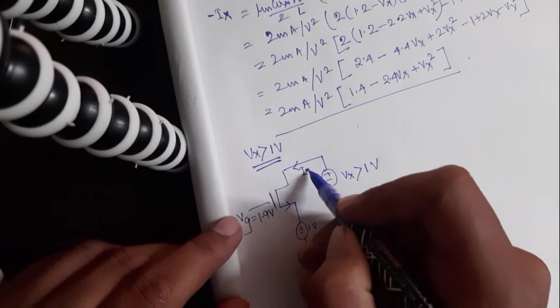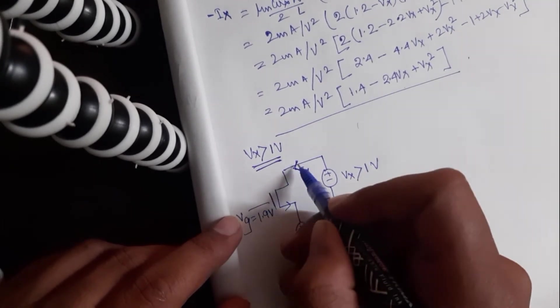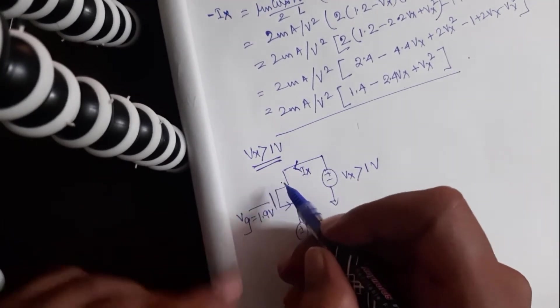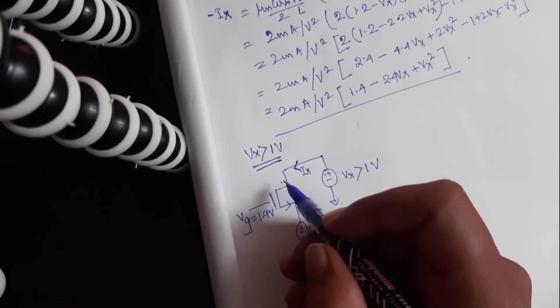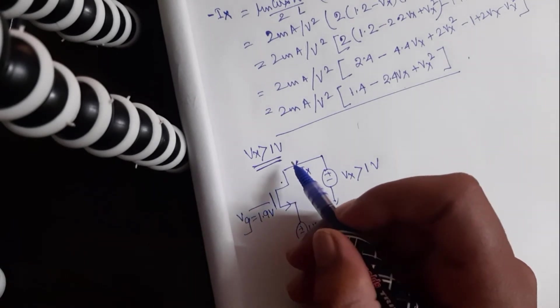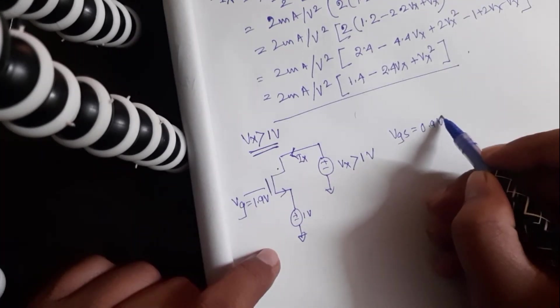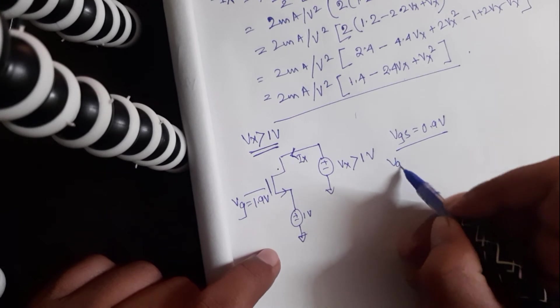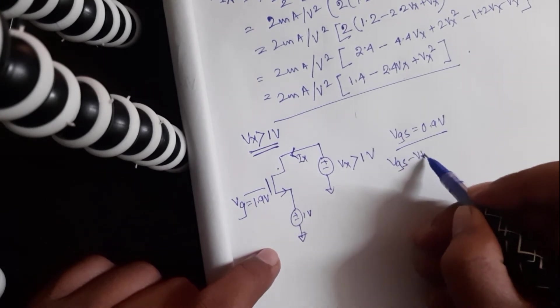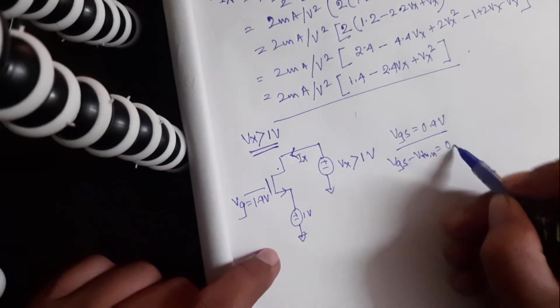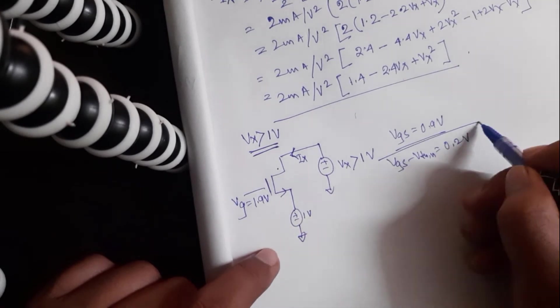So let me draw it again here. So now the current direction should be from right to left. In the earlier case, when Vx was less than 1, the current direction was from left to right. In this case, the Vgs is 0.9 volts. And correspondingly, Vgs minus Vth N should be 0.2 volts.